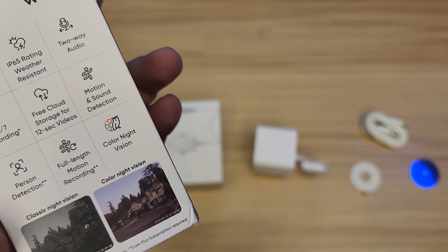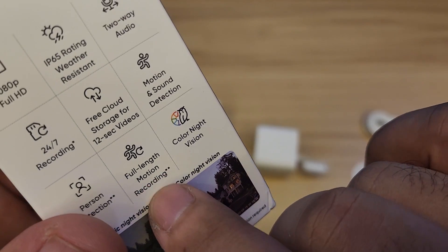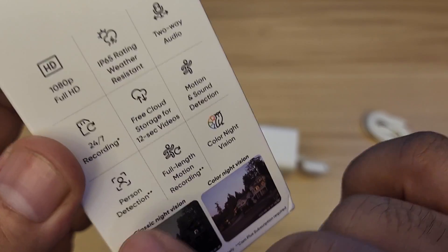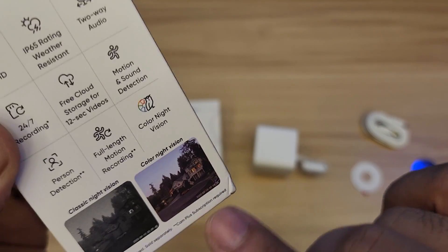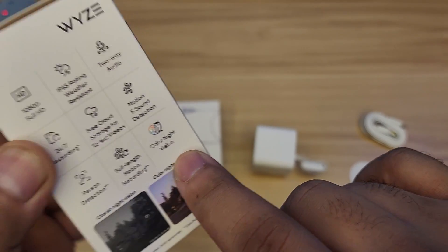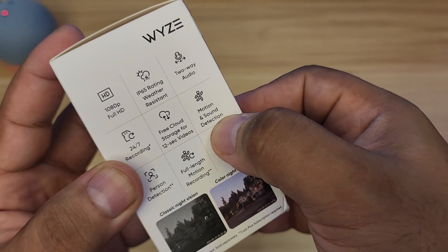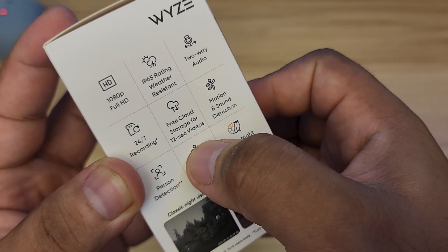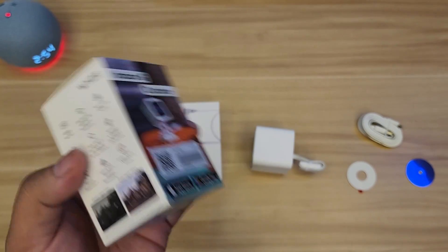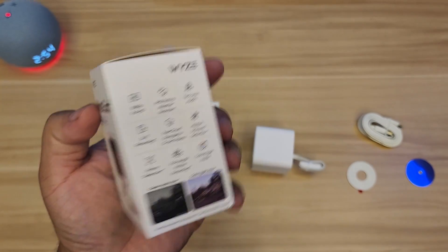Here it says micro SD card required for continuous recording. You do have Cam Plus subscription required if you want full-length motion recording. It also has person detection which again will require subscription. It has color night vision which requires nothing, motion and sound detection, and free cloud storage for 12-second videos.